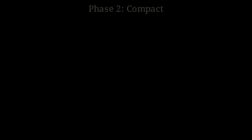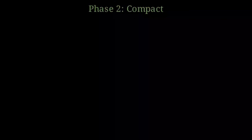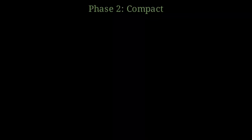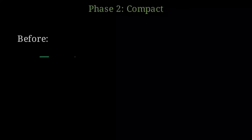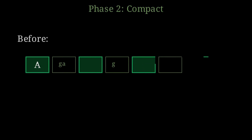Now comes the Compact phase. This is where Mark and Compact differs from Mark and Sweep. Look at the heap before compaction. We have Object A, then a gap, then Object B, then another gap, then Object C, more gaps, and Object D. The live objects are scattered with gaps between them.